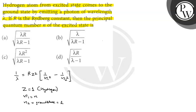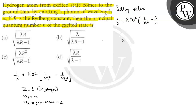Now, putting these values into our formula, our equation becomes: 1/λ = R · (1²) · (1/n² − 1). Simplifying further, 1/λ = R · (1/n² − 1).